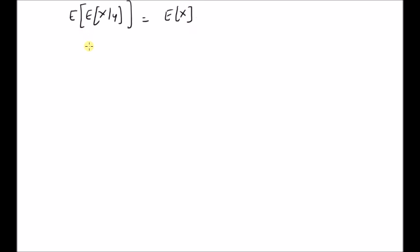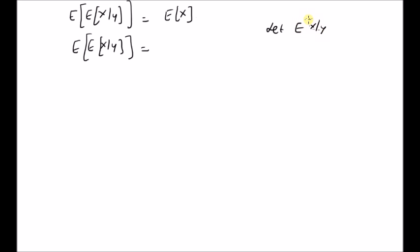Starting with the LHS, we have expectation of expectation of X given Y. Now, let expectation of X given Y be equal to g(Y). That is, we know that this is a function of the realization of the random variable Y.